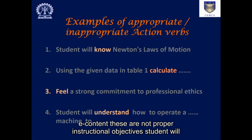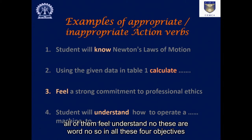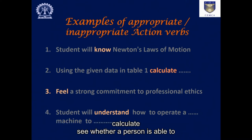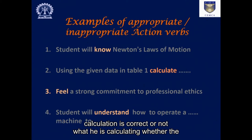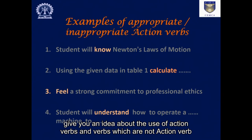For example, 'Student will know Newton's law of motion' is not a proper instructional objective — how much the student knows and what exactly he knows is not clear from the word 'know.' Similarly, 'understand' and 'know' are vague verbs, not action verbs. 'Calculate,' on the other hand, is an action verb because you can see whether a person is able to calculate, what he is calculating, and whether the calculation is correct. It is specific, measurable, and observable.